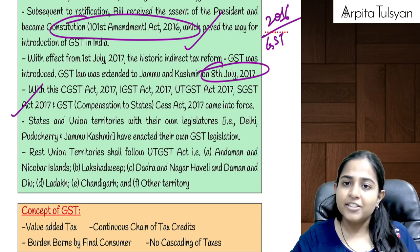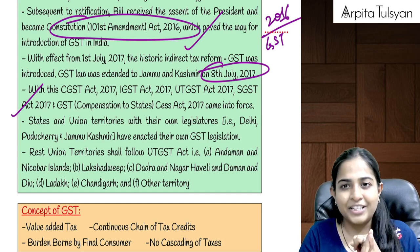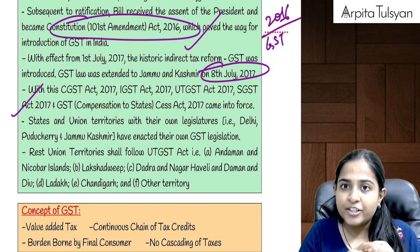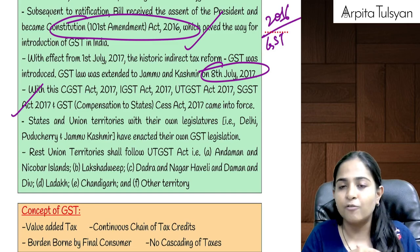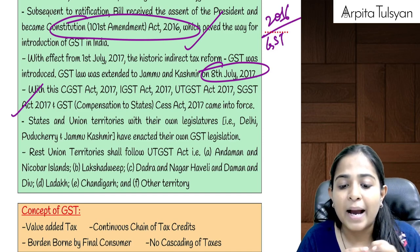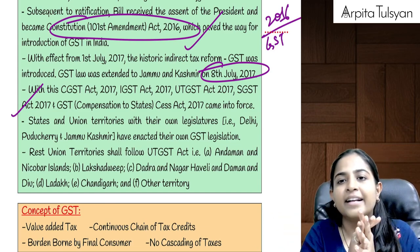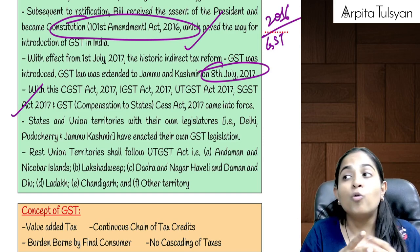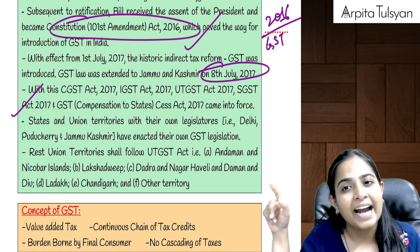Once GST came into picture, different acts were made: CGST Act was made, SGST Acts were made, IGST Act was made, UTGST Act was made, and GST Compensation to States Act 2017 was also made. Now, CGST Act will be applicable to whole of India. IGST Act will be applicable to whole of India because that is in control of the central government. UTGST Act will be applicable to union territories which are not having their own legislature — meaning it will be applicable to Chandigarh, Andaman and Nicobar, Ladakh, Lakshadweep, Daman and Diu, Dadra and Nagar Haveli, and any other territory as may be notified.